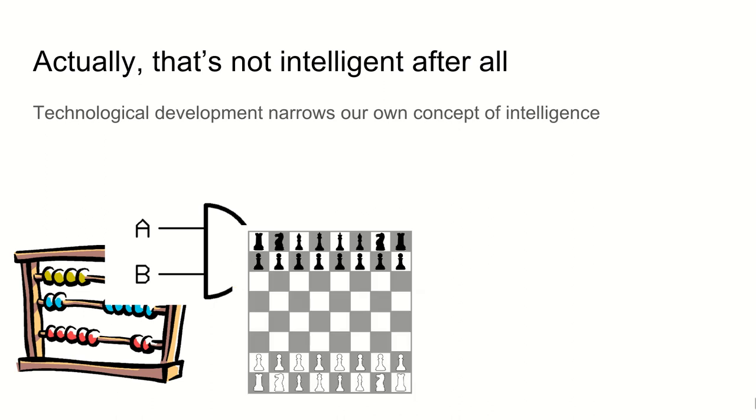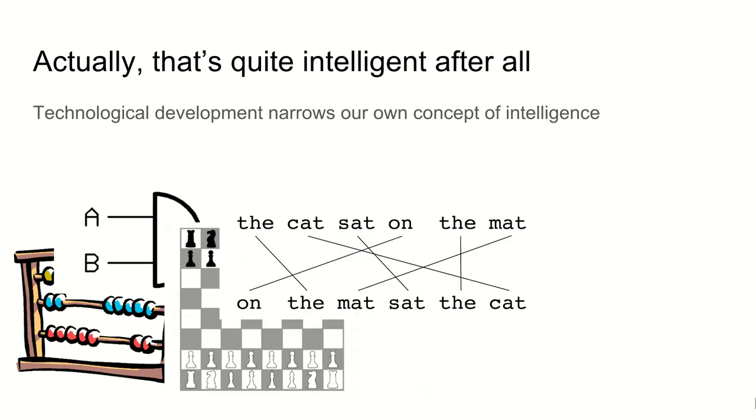Then there's chess. Chess was seen as a very intellectual game, but computers can now beat all of us, I believe. Language, being able to take a sentence and parse it and work out what's going on, it's something that seems slightly more intelligent, and that's something where we've had more progress recently.